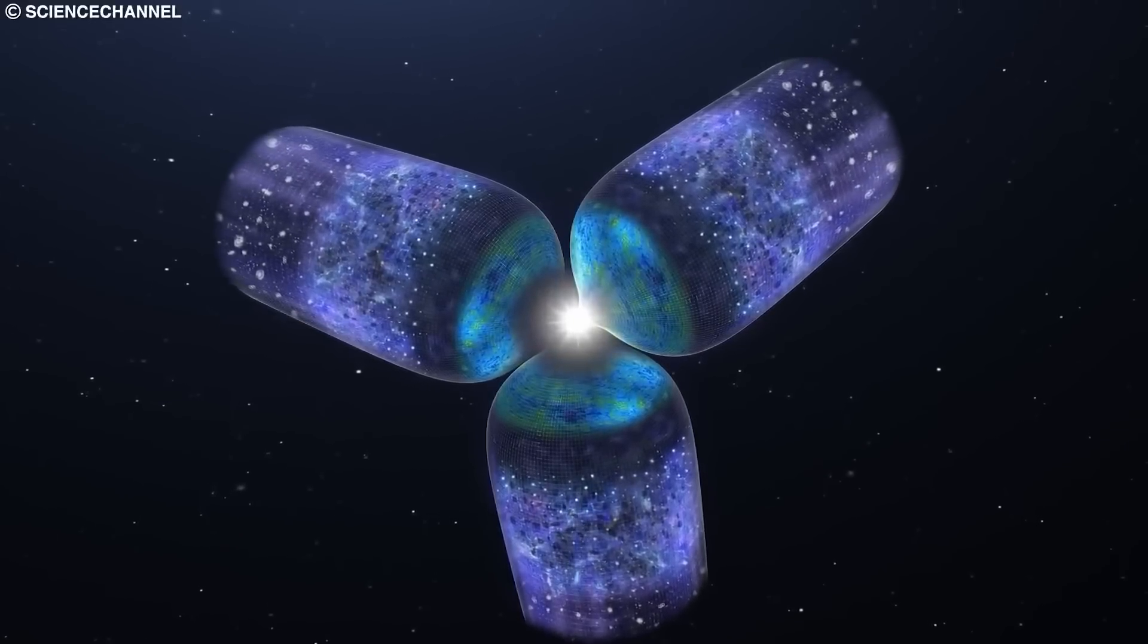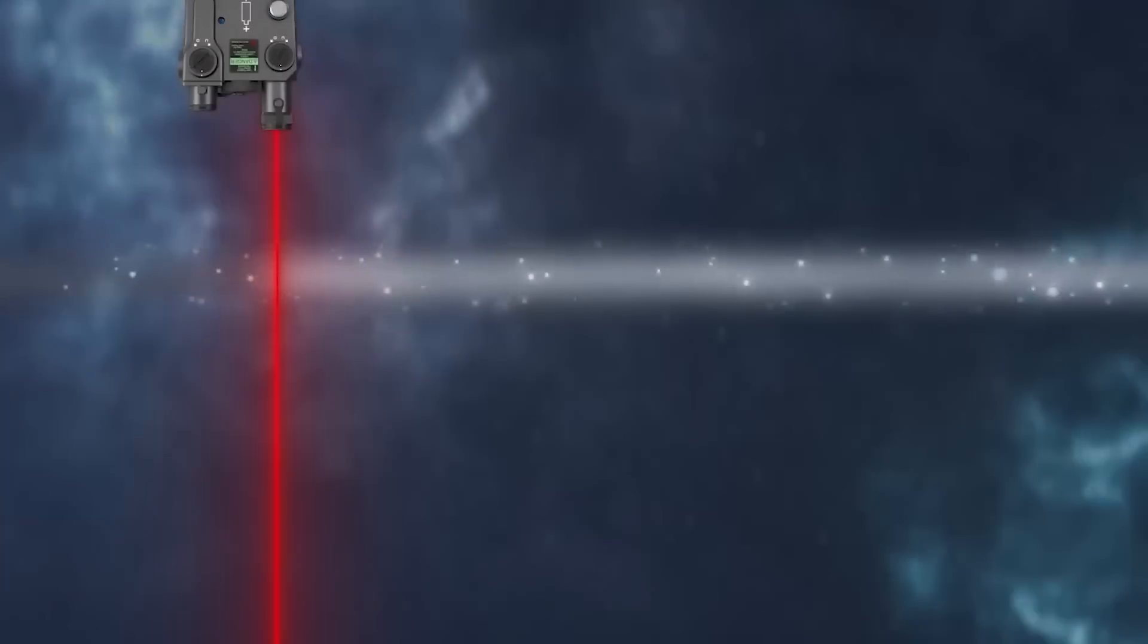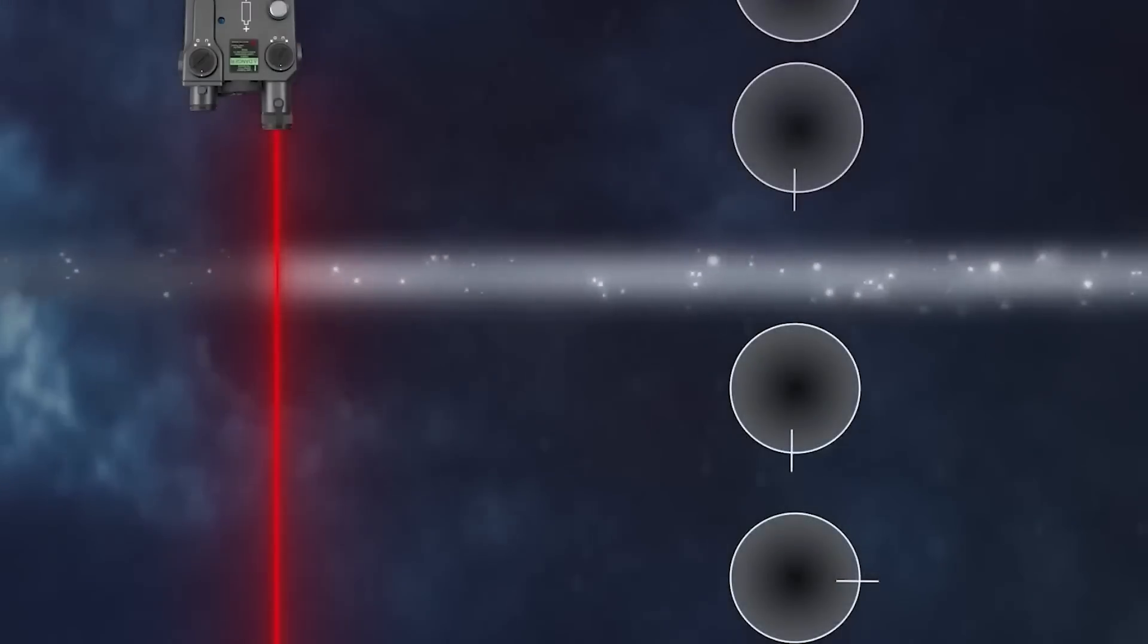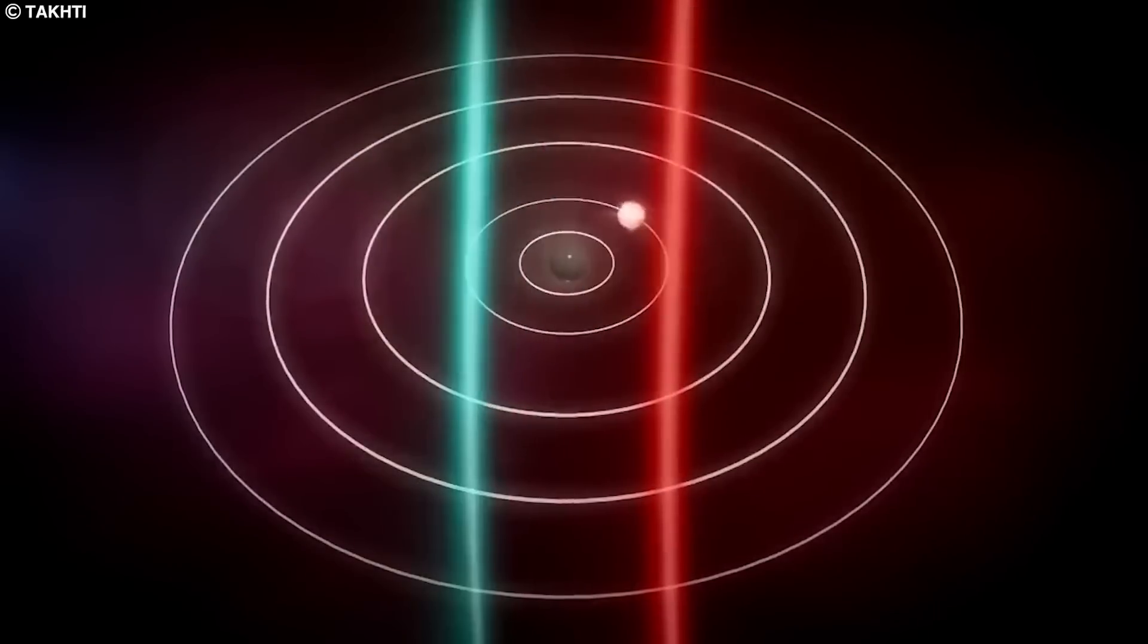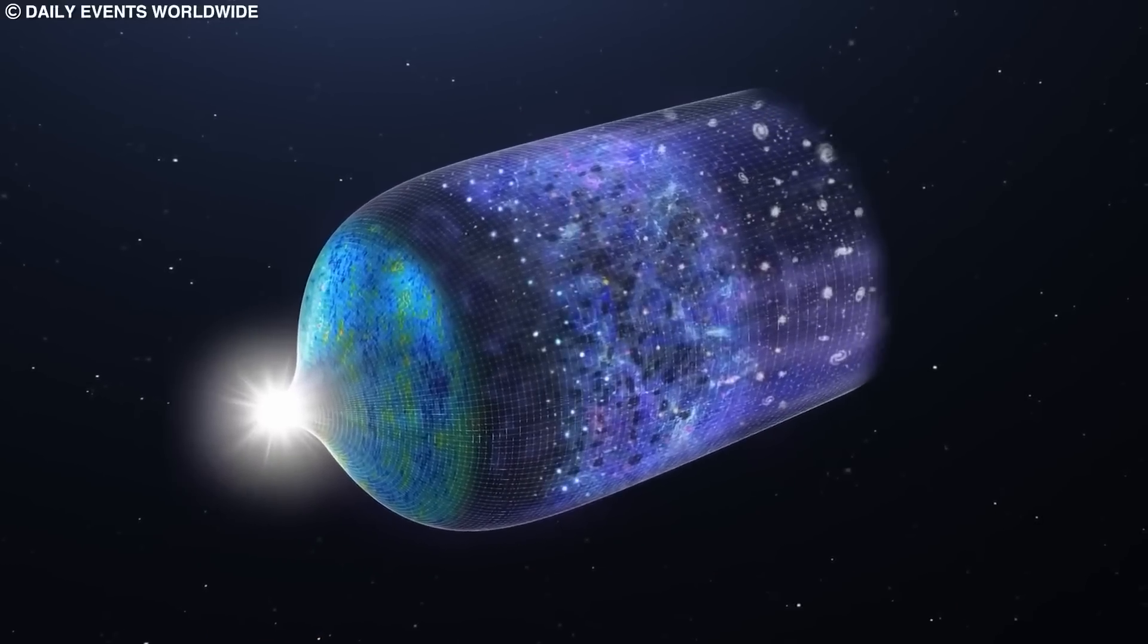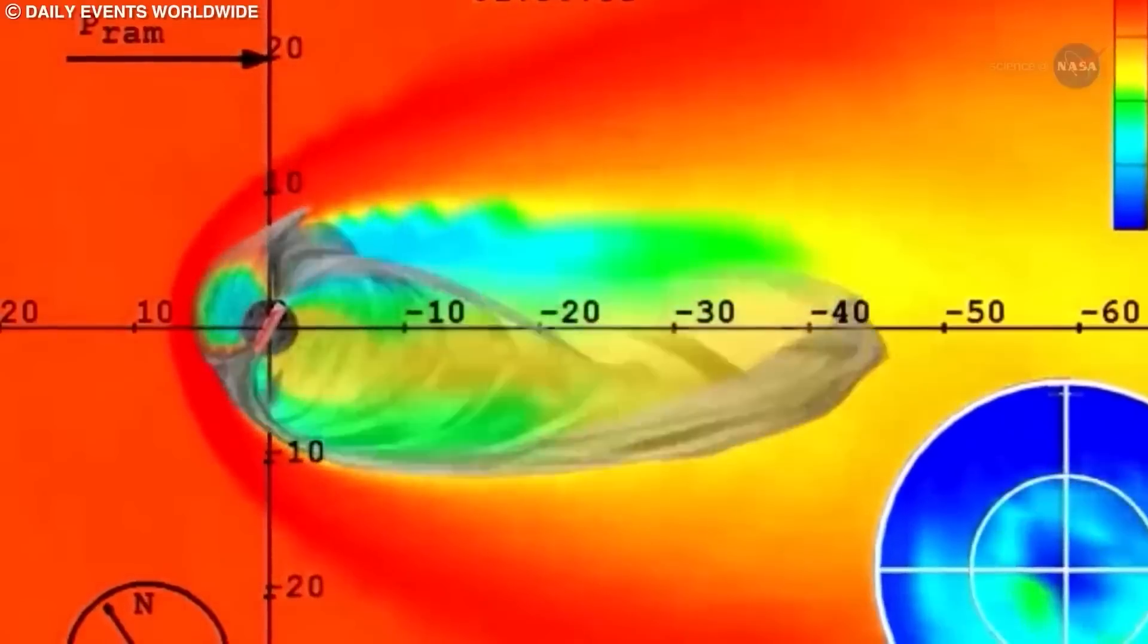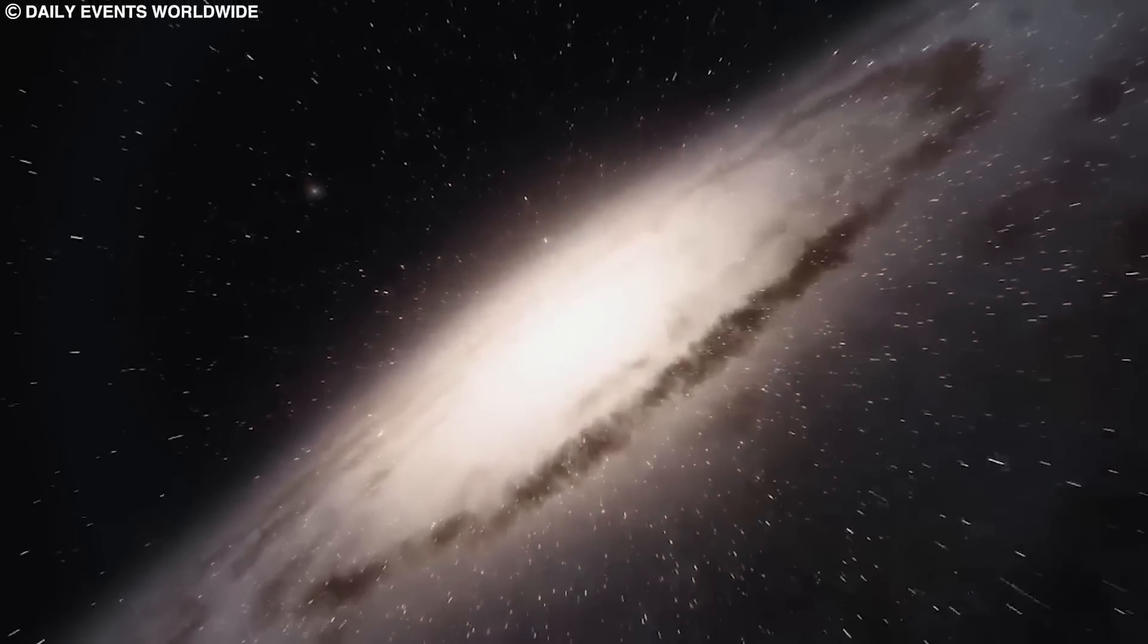We learn about the universe by observing it, just like how we learn about the world by exploring it. When we look at the farthest parts of the universe that we can see, we find something really interesting. The light that was emitted a long time ago, which we call the cosmic wave background, creates special patterns in the sky.